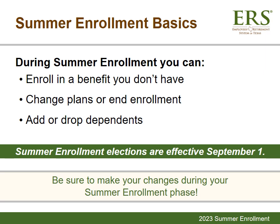You can also switch from a plan you currently have to another plan, end enrollment in a benefit, or add or drop dependents. Summer Enrollment elections are effective September 1st. Any changes that do not require evidence of insurability begin on September 1st. Just like in previous years, Summer Enrollment is broken up into four phases, to keep things running as efficiently as possible. Please make your changes during your Summer Enrollment phase by logging into your ERS online account.